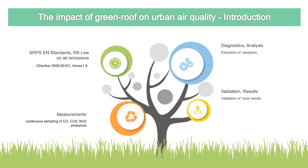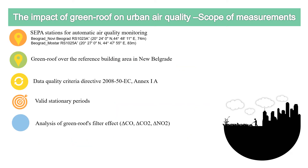We performed validation of results on the local area. In the scope of measurements, SEPA stations for automatic air quality monitoring are used. They are positioned at a certain location with an altitude difference of 9 meters between them. The measurement station monitoring air quality above the green roof is the reference building area in New Belgrade, placed near a busy intersection in the most highly urbanized area, close to the SEPA monitoring stations.